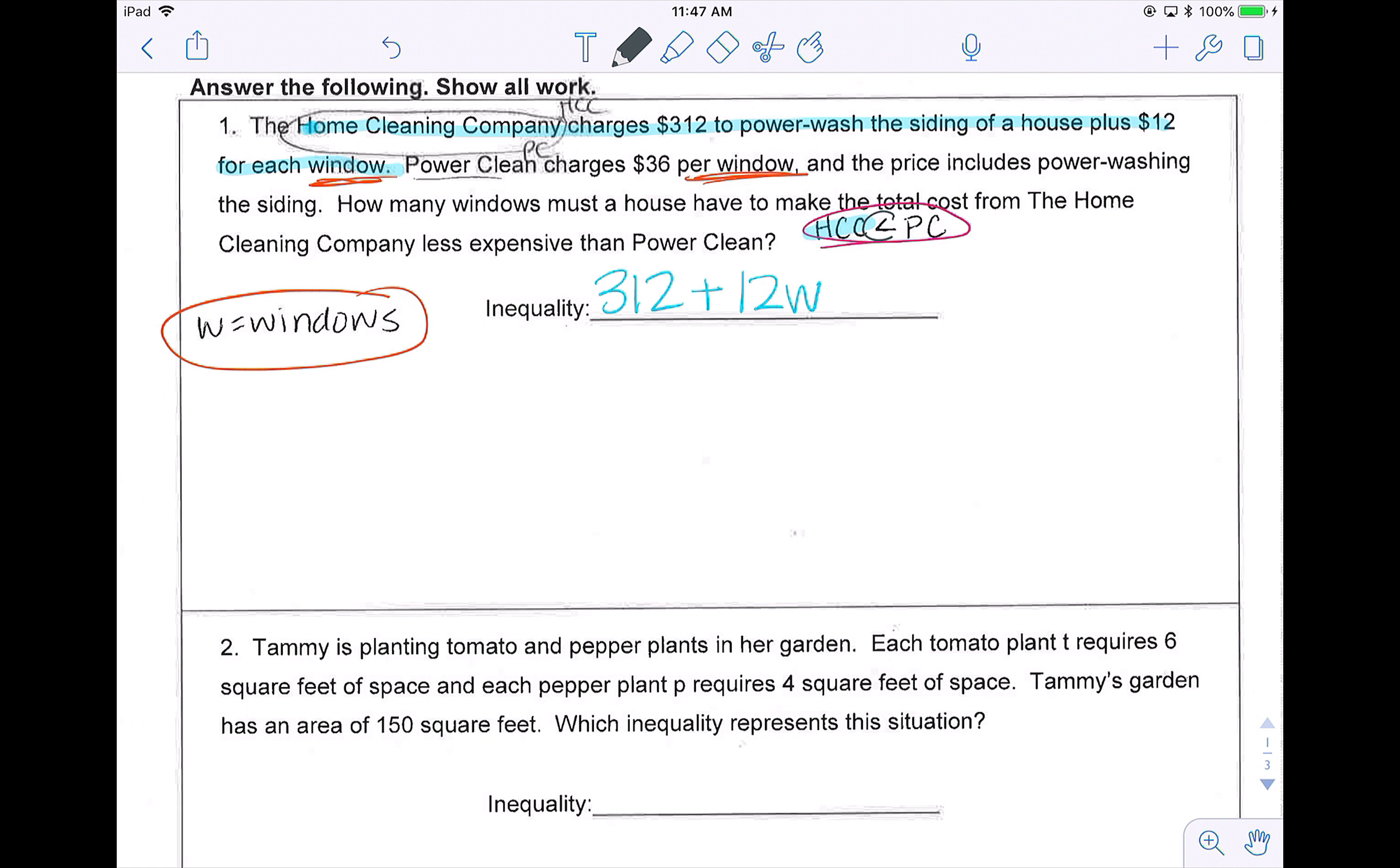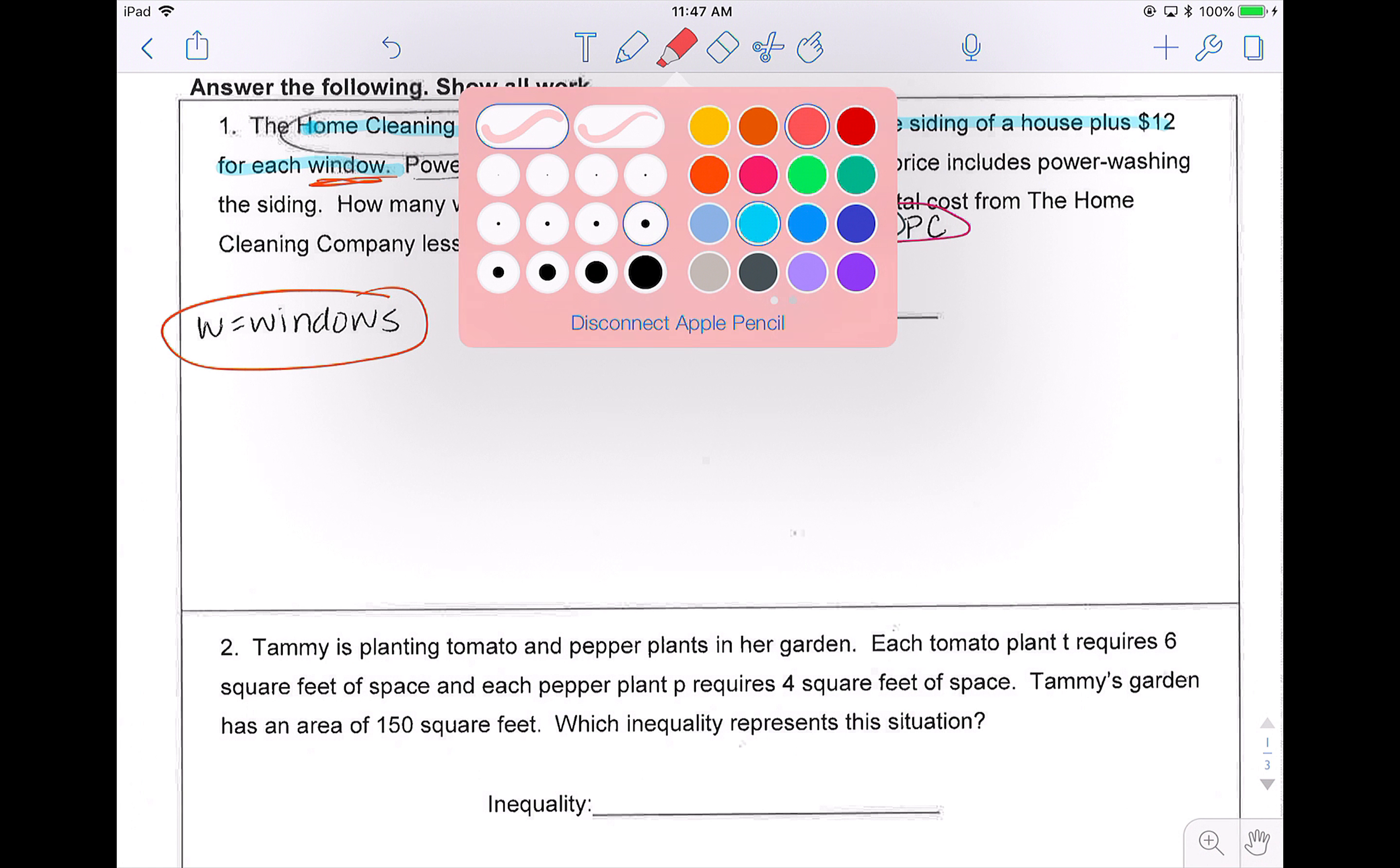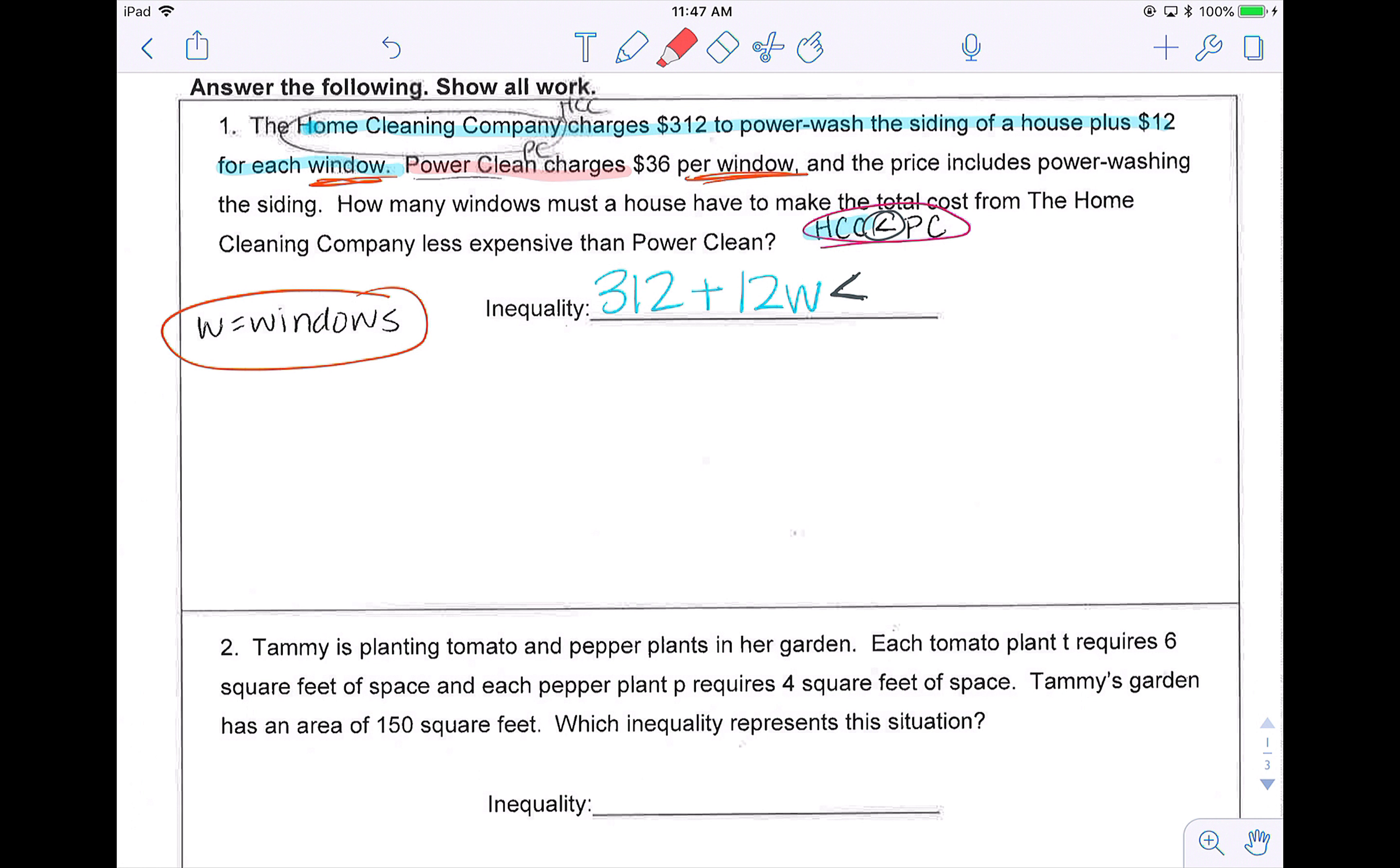From my inequality, I know that I'm looking for where the home cleaning is less expensive than PowerClean. So for PowerClean, I know that they charge $36 per window. PowerClean is going to be $36W. Now the question has asked me how many windows, so I am trying to solve for W.